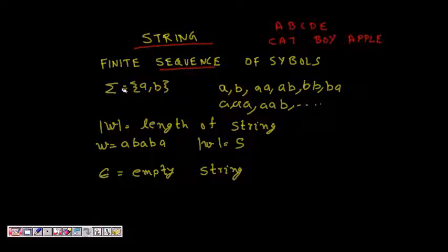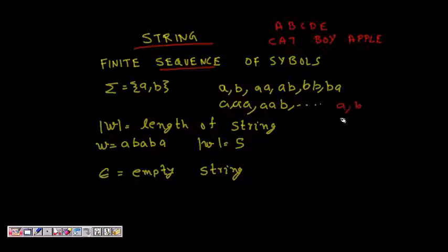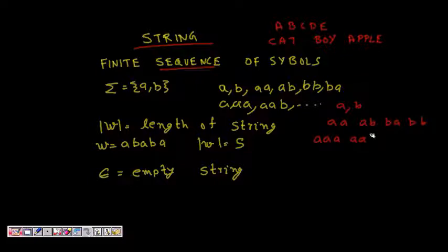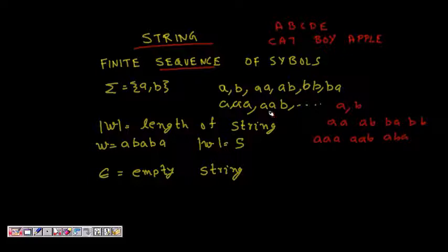For example, if our alphabet is {a, b}, the strings we can make include length-one sequences: a, b; length-two sequences: aa, ab, ba, bb; and length-three sequences like aaa, aab, aba, and so on. You can make an infinite number of strings even from a small alphabet of just two symbols.